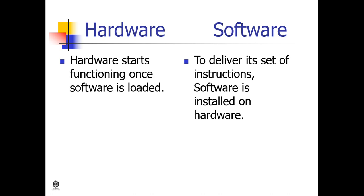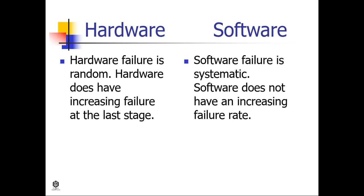Hardware starts functioning once software is loaded, while software, to deliver its set of instructions, is installed on hardware. If hardware failure is random, hardware does have increasing failure at the last stage, while software failure is systematic and software does not have an increasing failure rate.